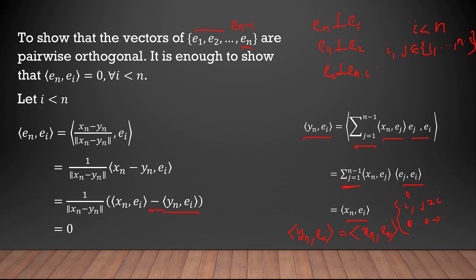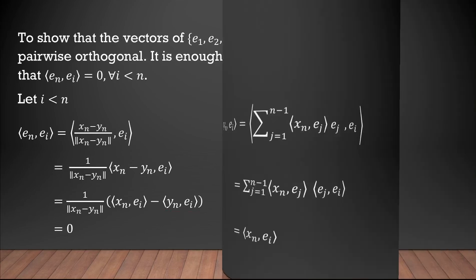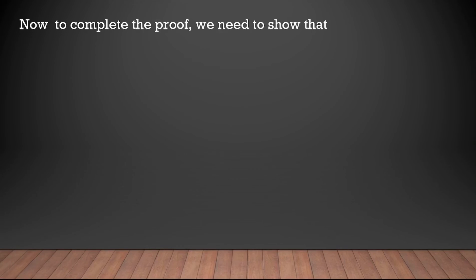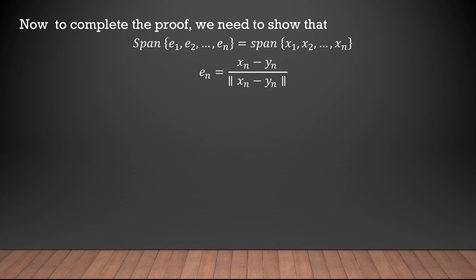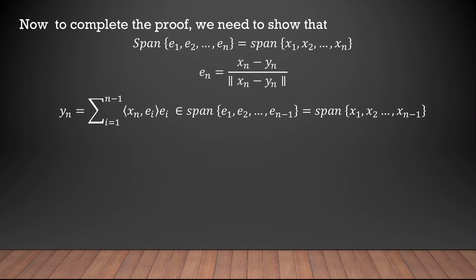So e_n is orthogonal to all e_i where i < n, meaning {e_1, e_2, ..., e_n} forms an orthonormal system, since ‖e_n‖ = 1 was already proved. It remains to show that span{e_1, ..., e_n} = span{x_1, ..., x_n}. Since e_n = (x_n − y_n) / ‖x_n − y_n‖ and y_n = Σ_{i=1}^{n-1} ⟨x_n, e_i⟩ e_i, we see that y_n ∈ span{e_1, ..., e_{n-1}}.